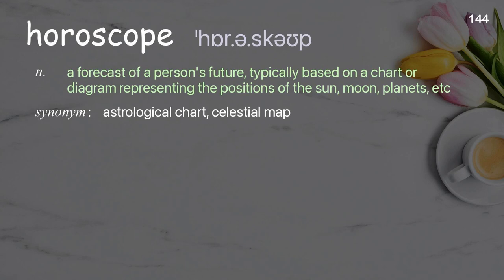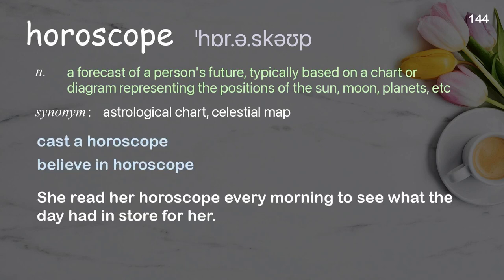Horoscope: a forecast of a person's future, typically based on a chart or diagram representing the positions of the sun, moon, planets, etc. Examples: cast a horoscope, believe in horoscopes. She read her horoscope every morning to see what the day had in store for her.